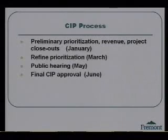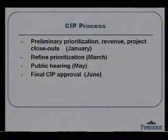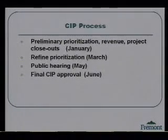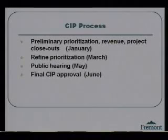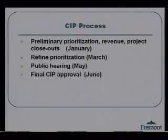I'll begin by talking about the process for this cycle of the CIP — what we've been up to and what we'll be doing in the future, and how we'll be involving the Council. The 2009-10 through 2013-14 CIP started in September with staff project submittals. Initial project cost estimating has just been completed. The next step is a prioritization vote by senior staff, which will provide you with a high, medium, low project ranking for our recommendations, which you'll see when we come back to you in January.